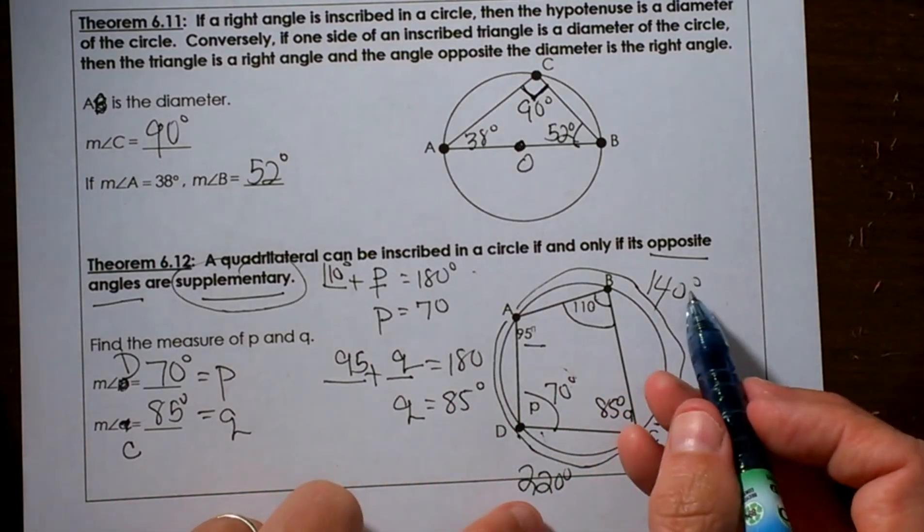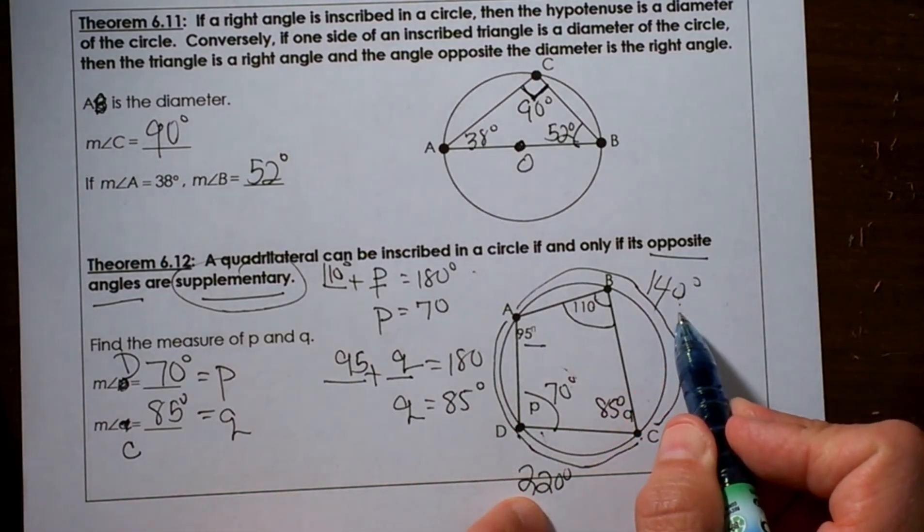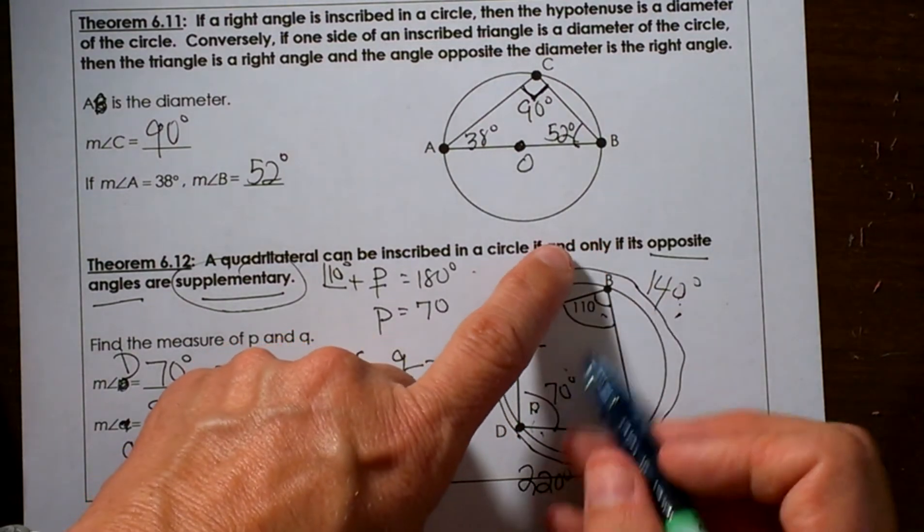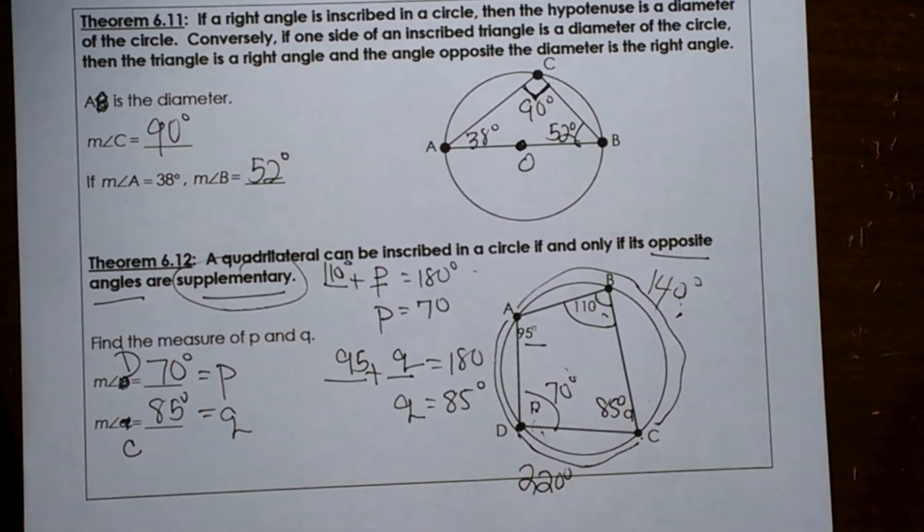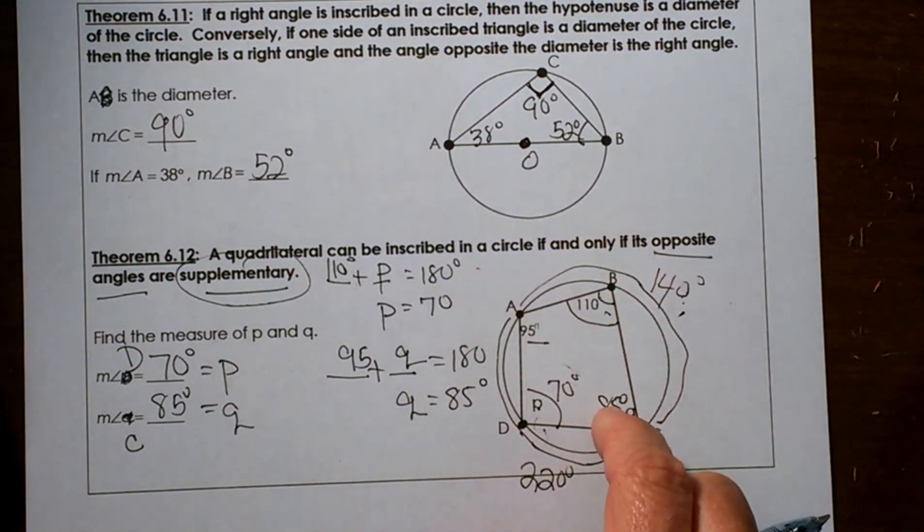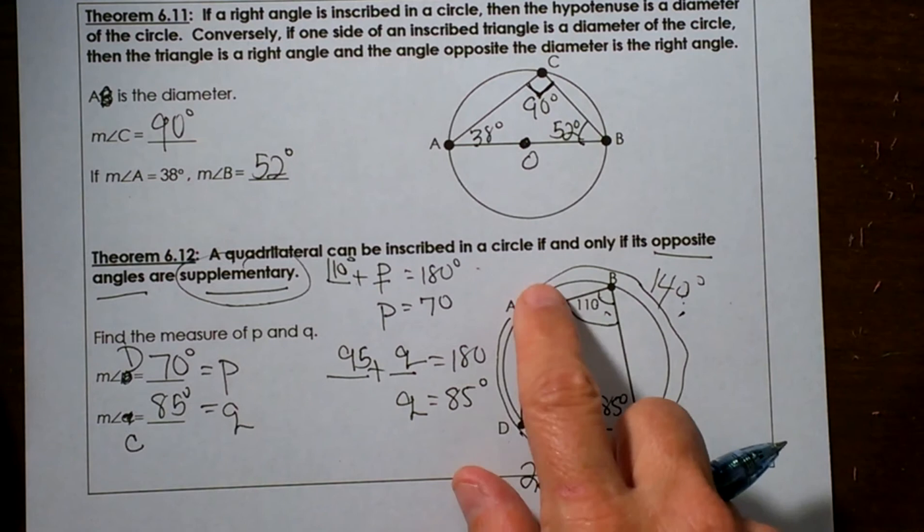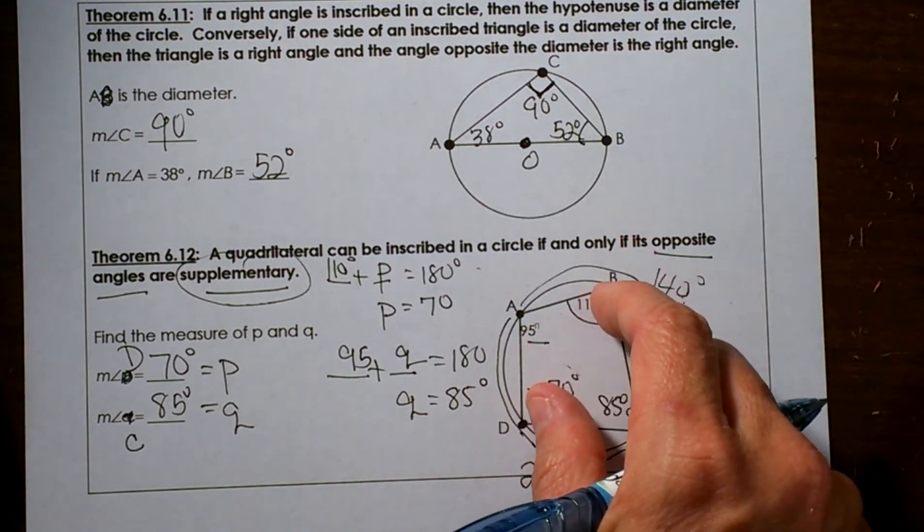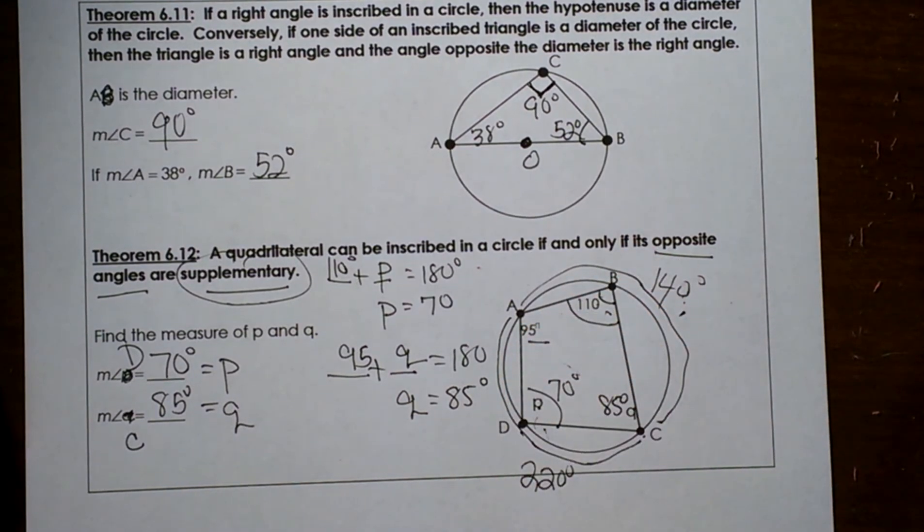Now notice these two arcs add to 360 because half of the inscribed angle adds to half of a circle. So hopefully that helps you see that when you have a quadrilateral inscribed in a circle, you are encompassing the whole circle, so that means that these angles on the inside would have to be half. Anyway, I hope this video was helpful to finish up on lesson 7.